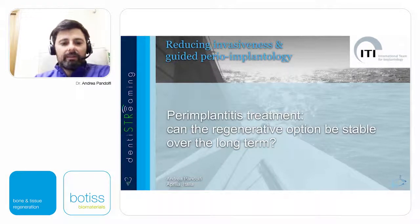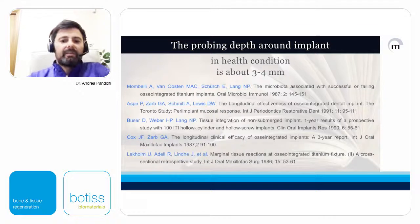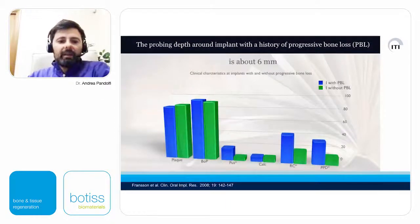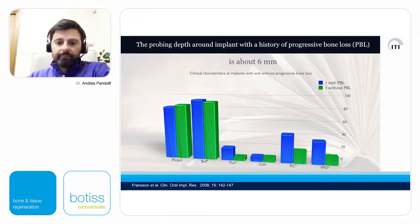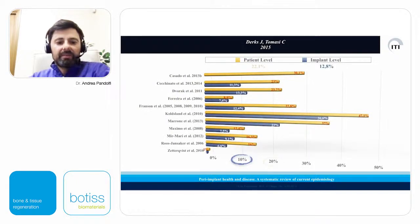We know that probing of peri-implant tissue in healthy condition is 3 or 4 millimeters, and if we have 6 millimeters of peri-implant probing we are already in a stage of progressive loss of peri-implant bone support. From the literature, the prevalence of peri-implantitis in patients treated with implants is about 20%, or potentially 12% of implants used to rehabilitate patients are affected by peri-implantitis.